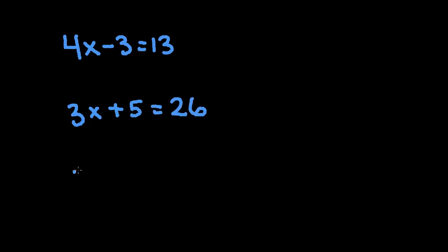So I'm going to give you a couple to try. 4x minus 3 is equal to 13. 3x plus 5 is equal to 26. And 3 fourths x plus 2 is equal to 20.